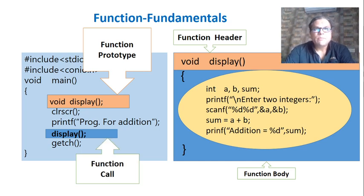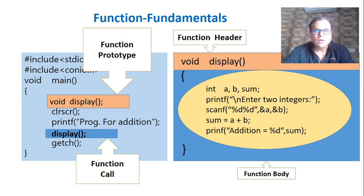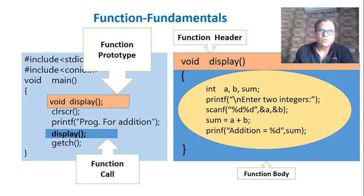After the compiler executes the function call command, it will stop or suspend the remaining execution of main and start execution of the called function. In this situation, main is known as the calling function and display is known as the called function. So we have two functions in the program, and I have revised the different terms related to functions.